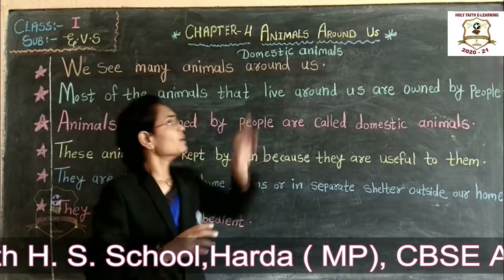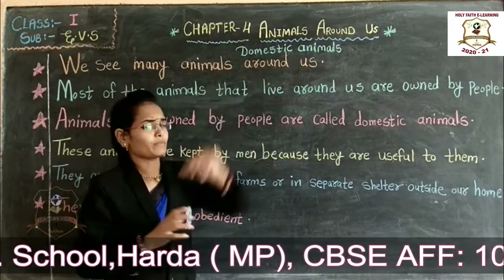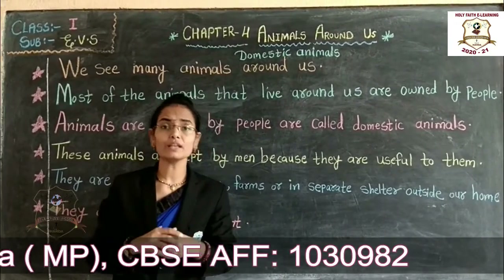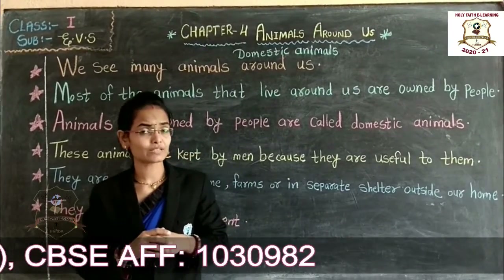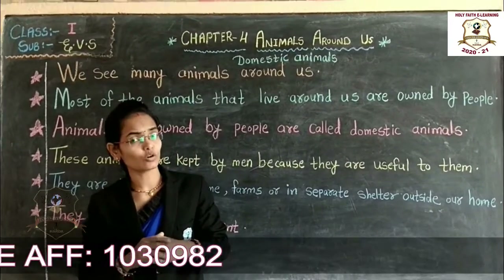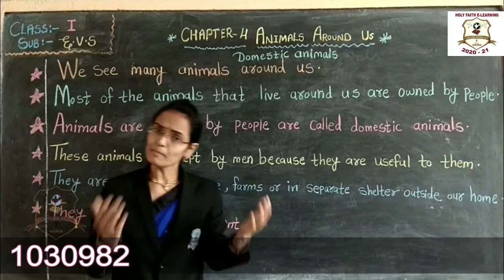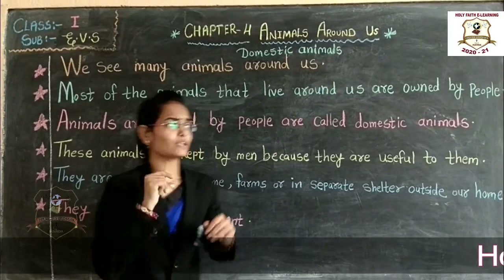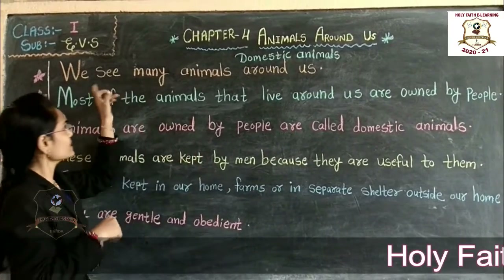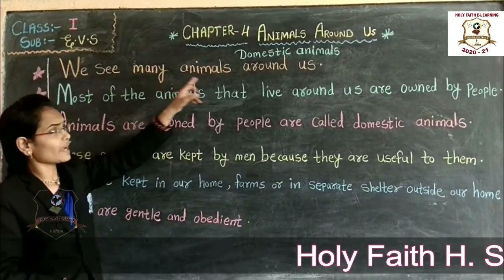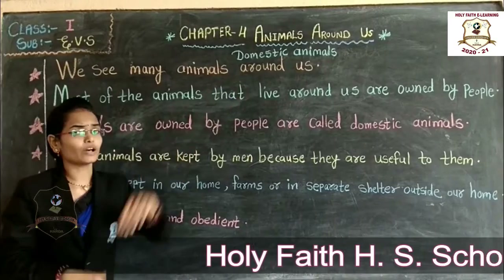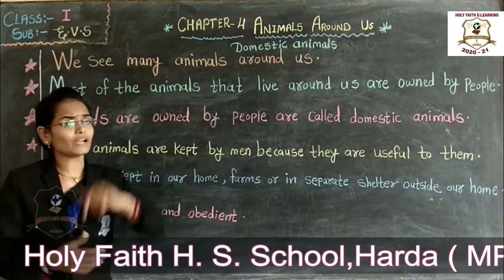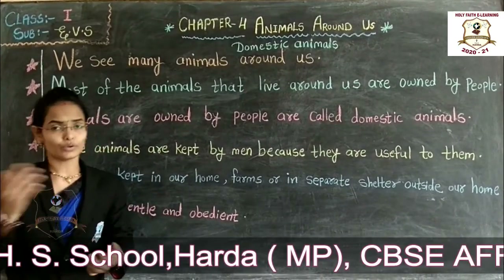First we will learn Domestic Animals. Domestic Animals are animals who are living in the world. We see many animals around us, like dog, cat, hen, etc.